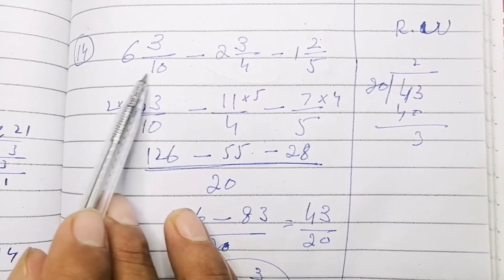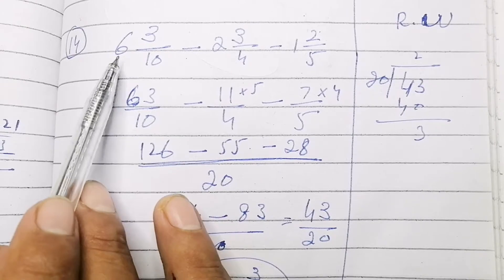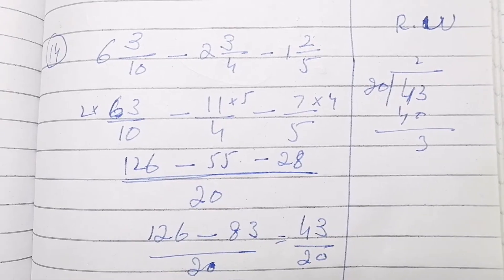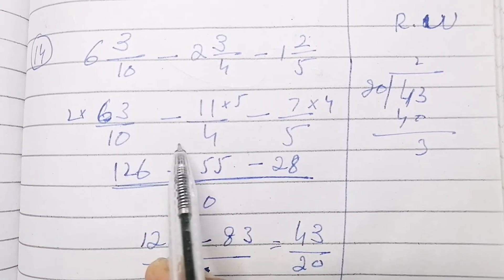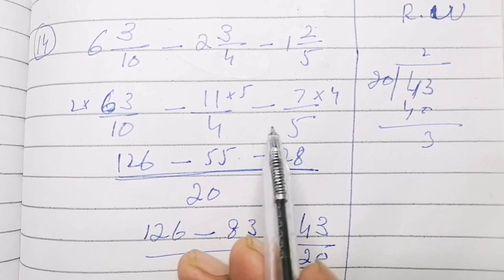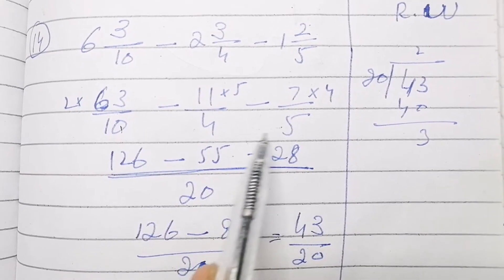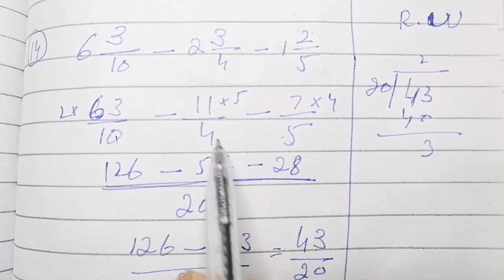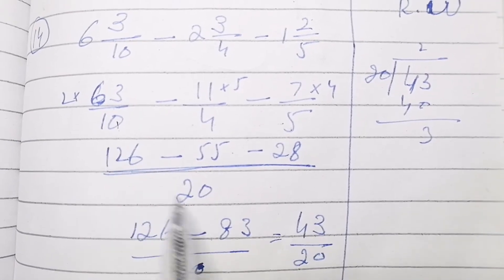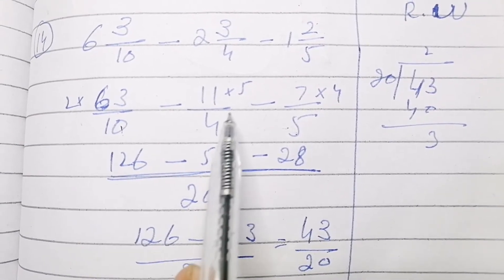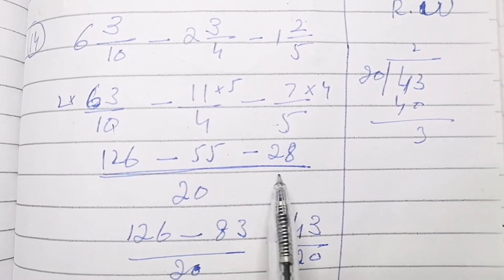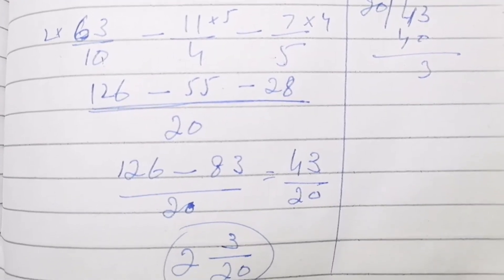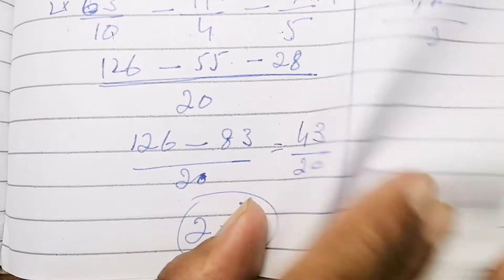Question 14: mixed fractions — 6 whole 3 over 10 minus 2 whole 3 over 4 minus 1 whole 2 over 5. Change the mixed fractions into improper fractions. The denominators are 10, 4, and 5, so the LCM is 20. After calculating and subtracting, you get 43 over 20, which gives the answer 2 whole 3 over 20.